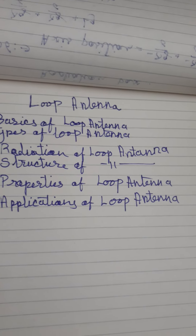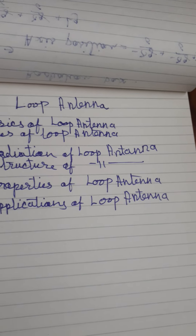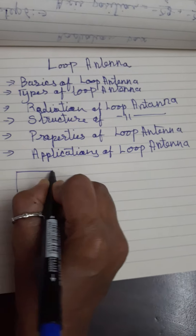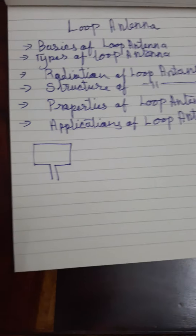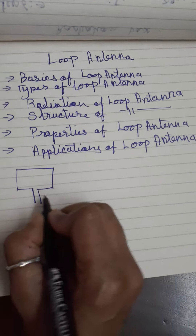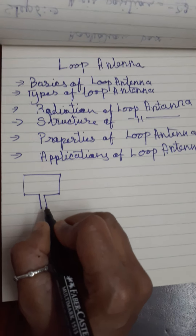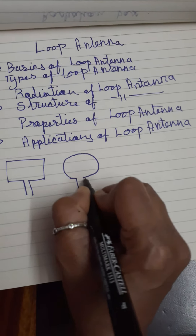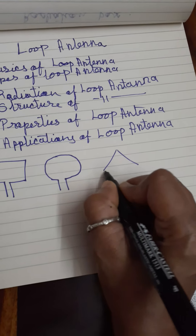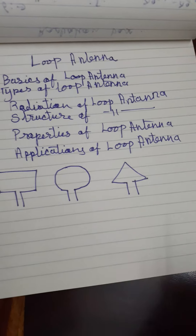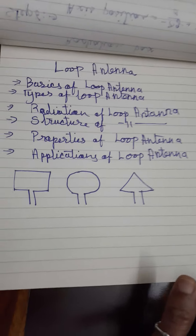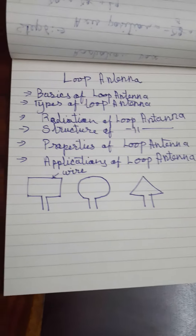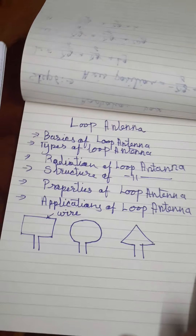Let us look at different shapes of loop antennas. The possible shapes could be a rectangular shape — you can turn any wire into a rectangular shape, where you give the feed or connect the transmission line, which acts as the excitation point. It could be a circular loop antenna or a triangular loop antenna. Basically, it could be any shape. At this point, we are considering a wired loop antenna. Loop antennas could also be planar — microstrip loop antennas are also present.